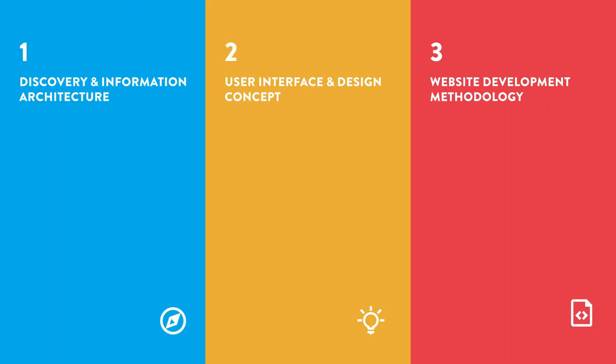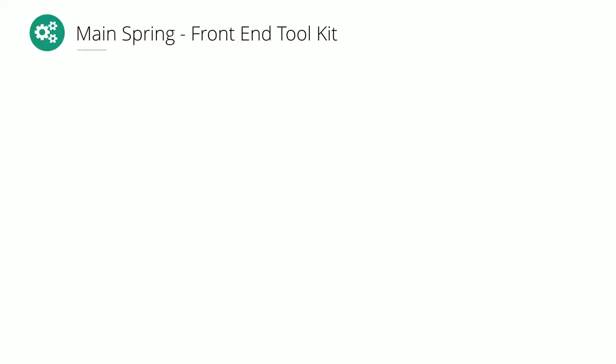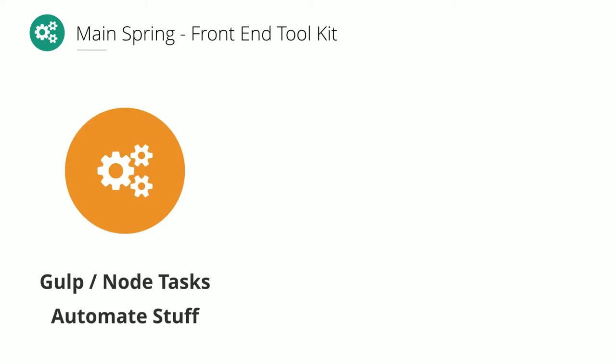Now we're in the third phase: build. I'm not going to talk in detail about the website development itself, but the front-end theme we use is built on a front-end stack we call Mainspring.io — an open-source Bootstrap project we use for all our work. Mainspring is really a toolkit that makes our process faster when creating websites.